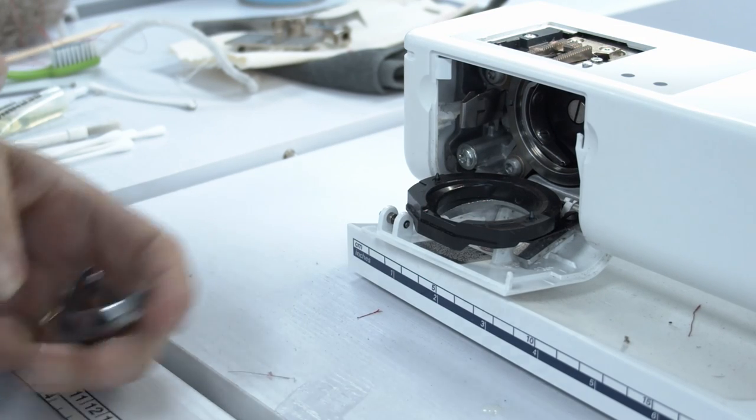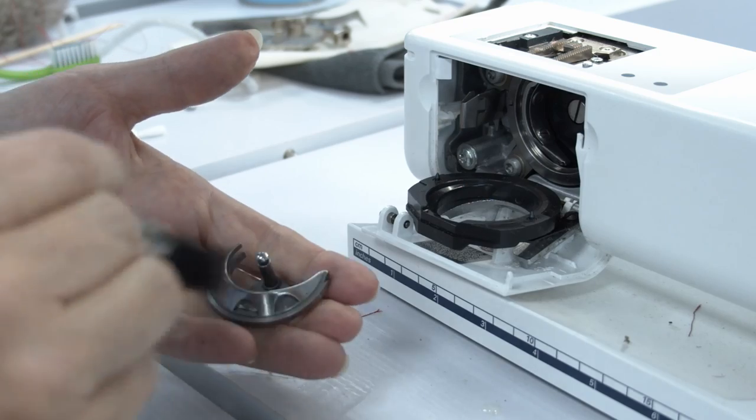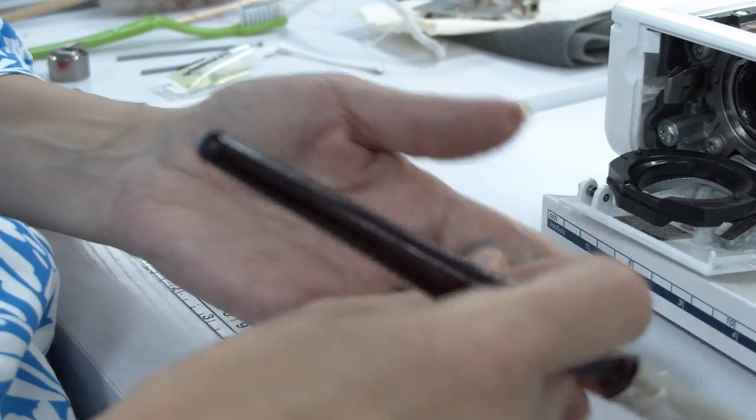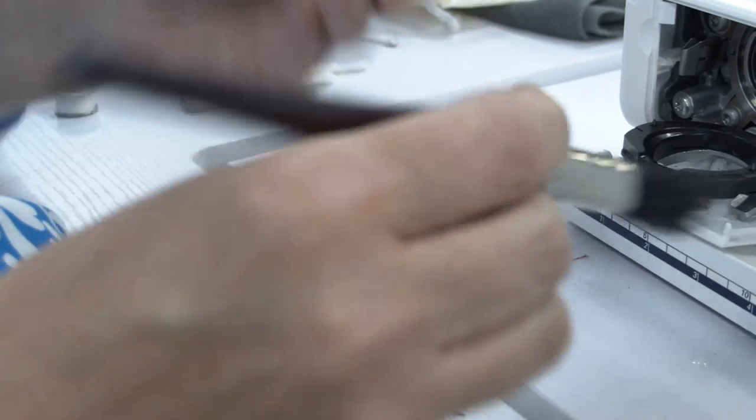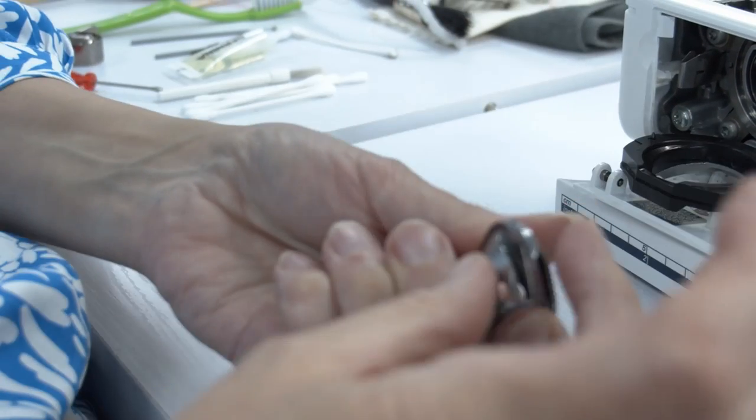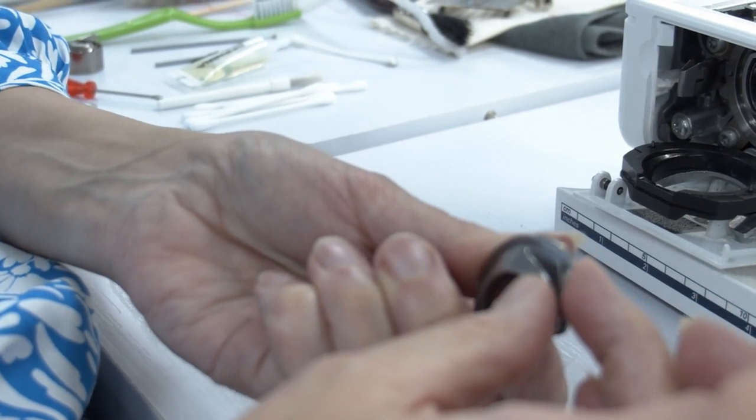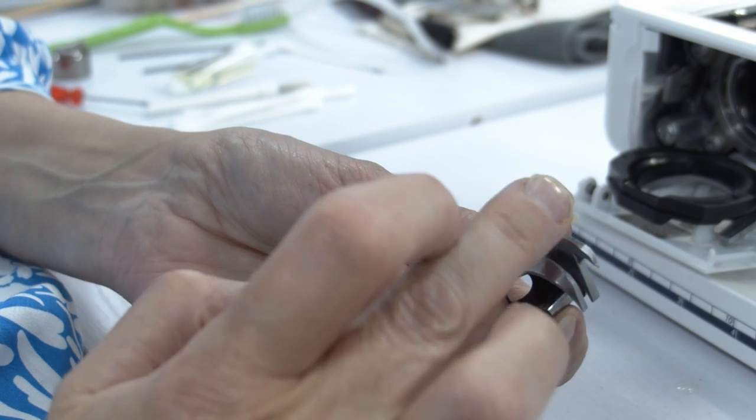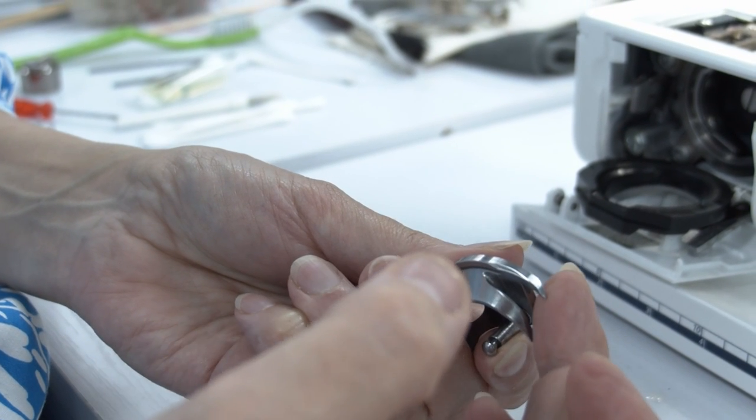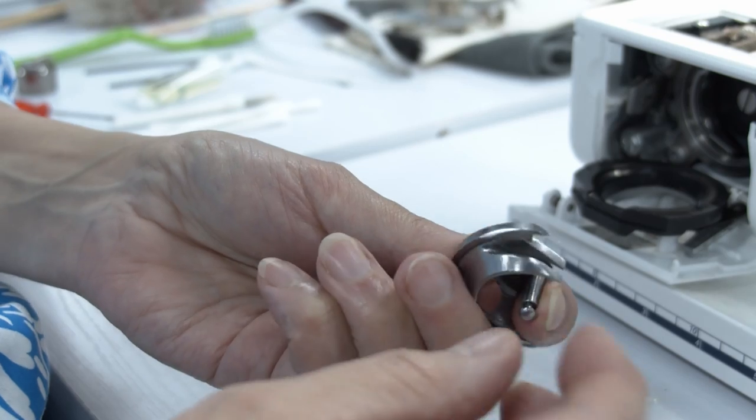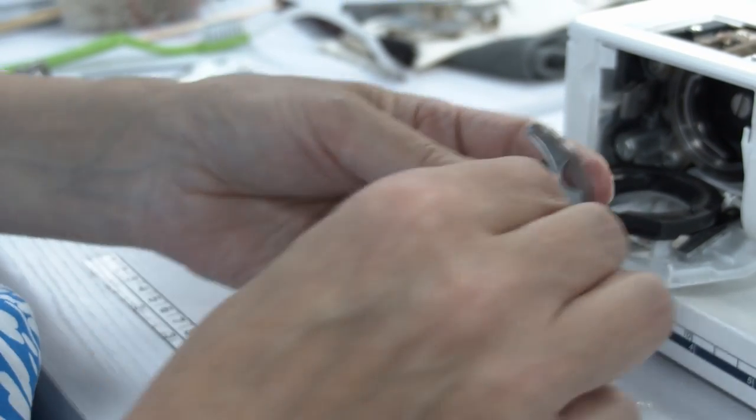We need to just check that the race is nice and clean, and the hook is nice and clean. So here we go, give it a little wipe. I'm just going to check that there's no burrs on here. No, we're all right. There's no sharp edges there, so hopefully the machine is not going to be giving us any problems.